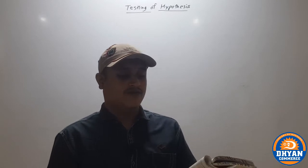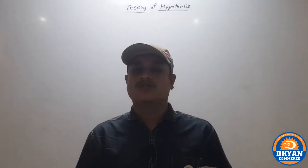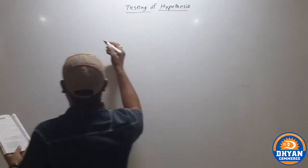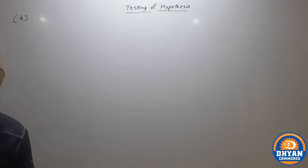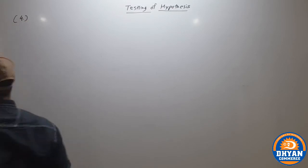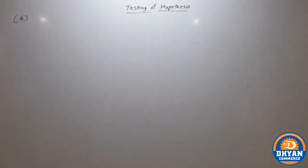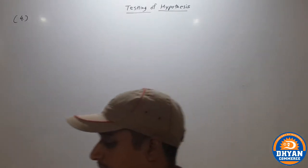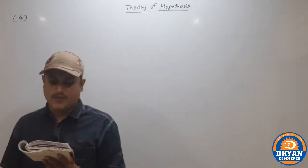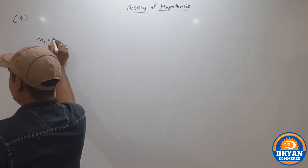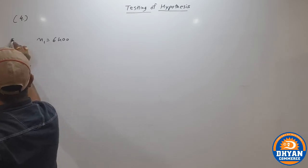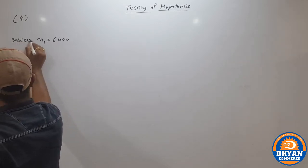Question number 4 states: a sample of heights of 6400 soldiers has a mean of 67.45 inches with standard deviation 2.56. So we note: n1 = 6400, x1 bar = 67.45, and s1 = 2.56. This data is all sample-related.